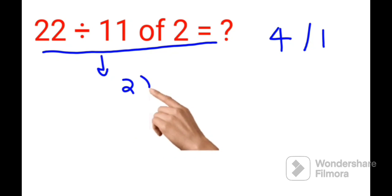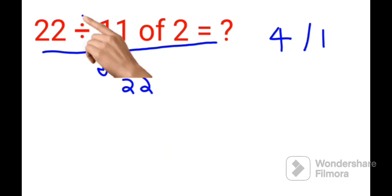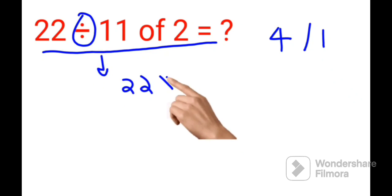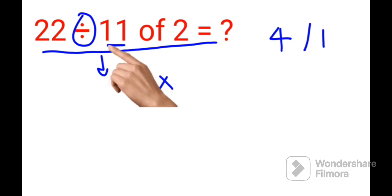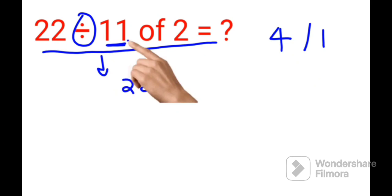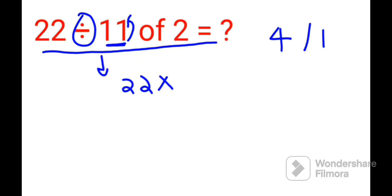So we start with 22. Whenever you have a division sign, you will change it into multiplication, and when you do that, the next number gets reciprocated. So the reciprocal of 11 will now be 1 upon 11. The word 'of' is nothing but multiplication.